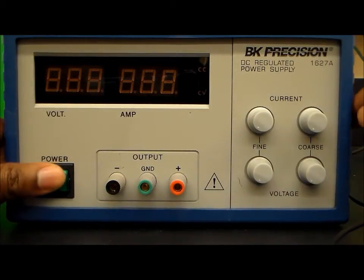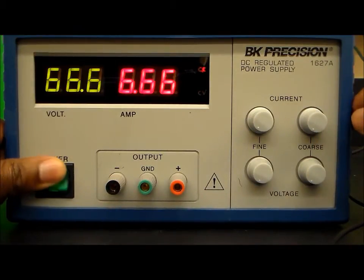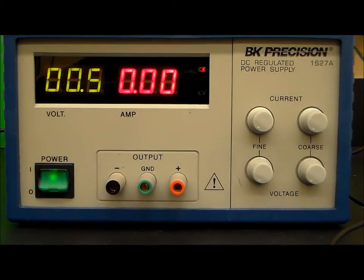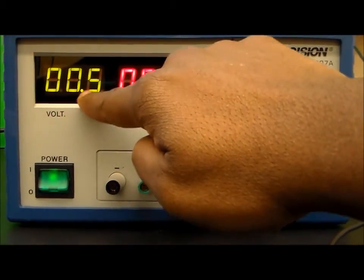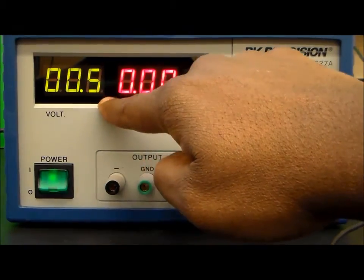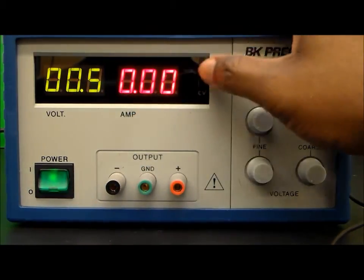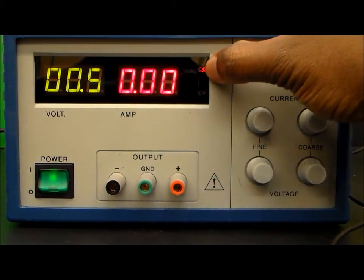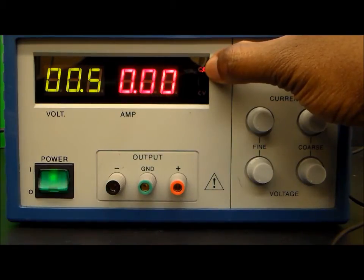So let's go ahead and turn on the power supply. And you'll notice at this time that the voltage is reading as 0.5 volts, zero amps, and it's giving a constant current for the output.